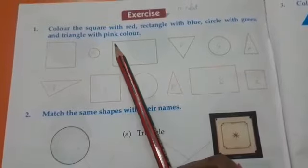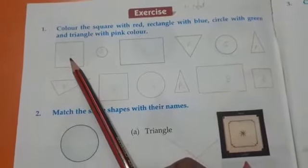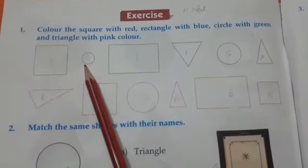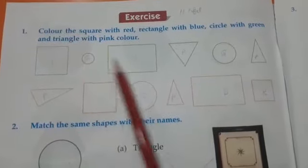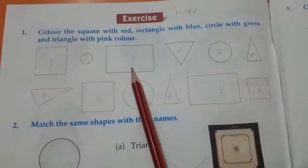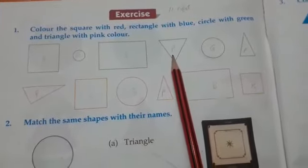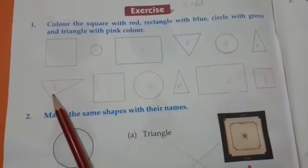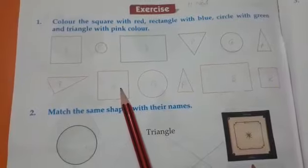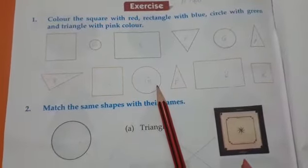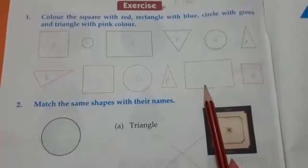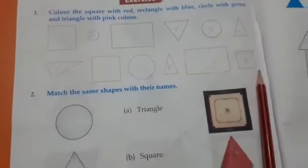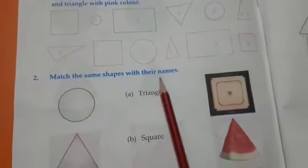Triangle with pink, square red, circle green, rectangle blue. Clear. Next, match the same shapes with their names.